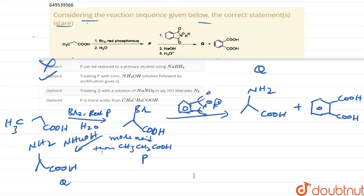Now coming to third one: treating Q with NaNO2 in aqueous HCl liberates N2. It forms alcoholic carboxylic acid and N2 gas, so this one is also the correct statement.